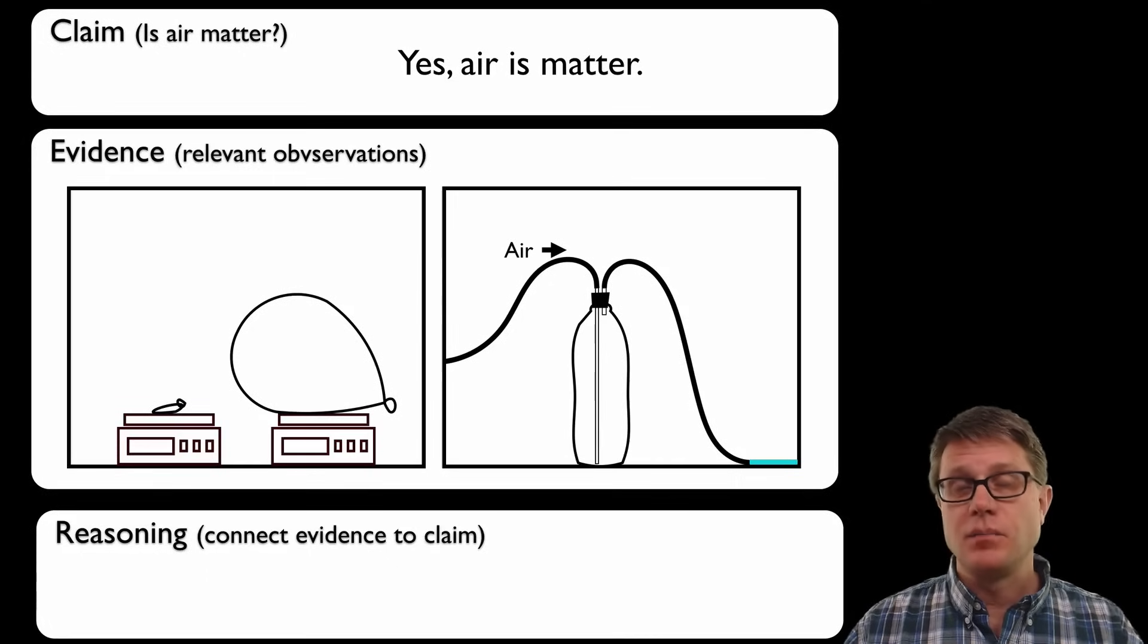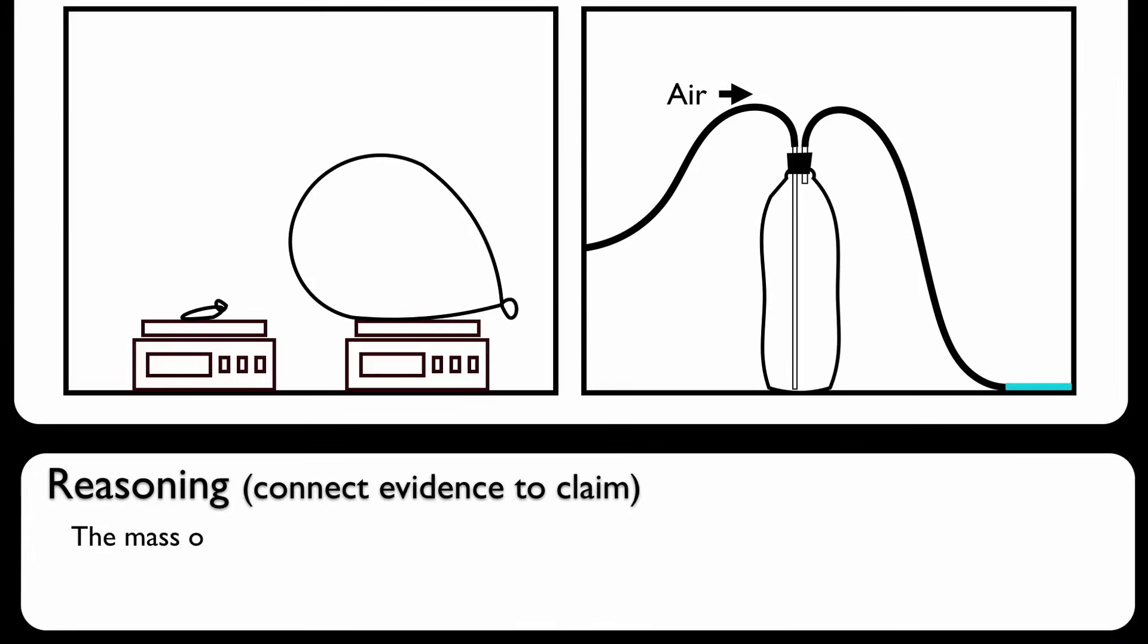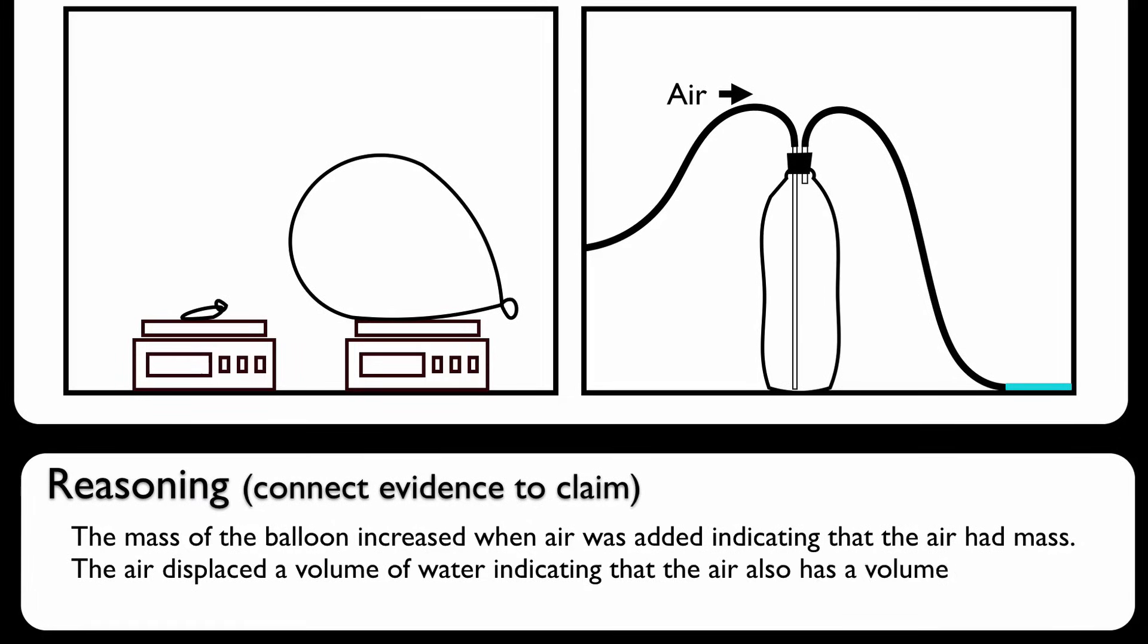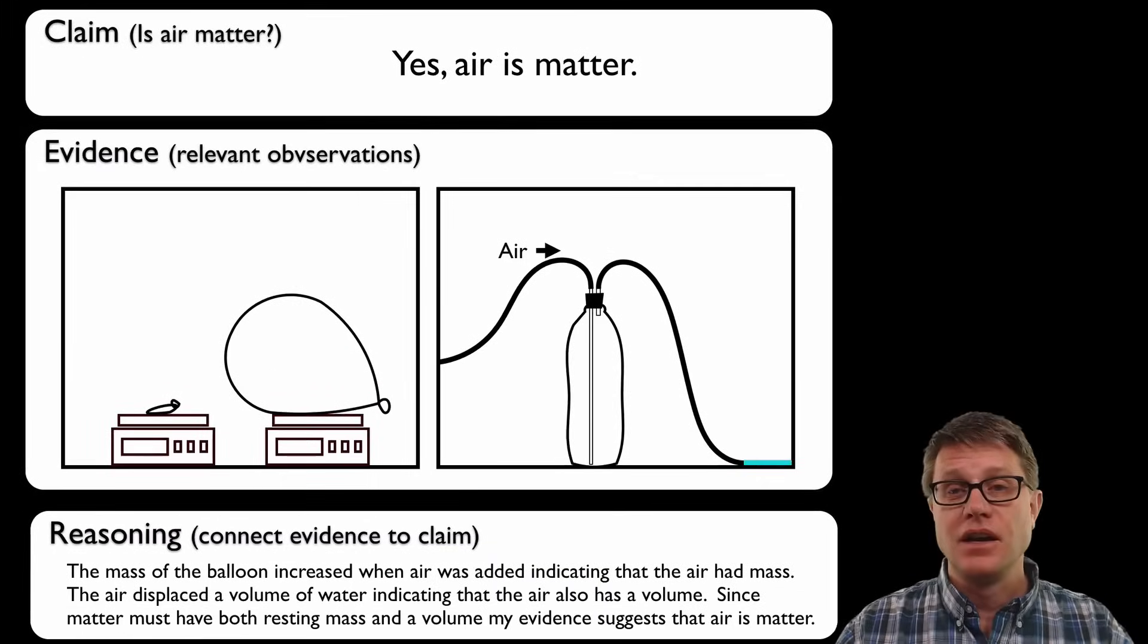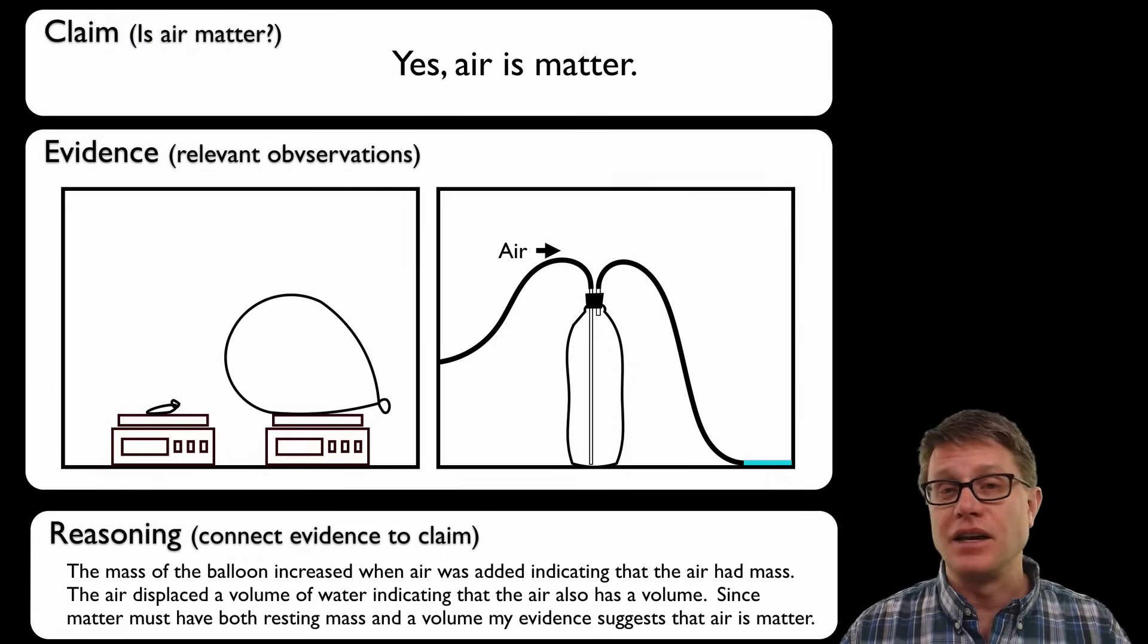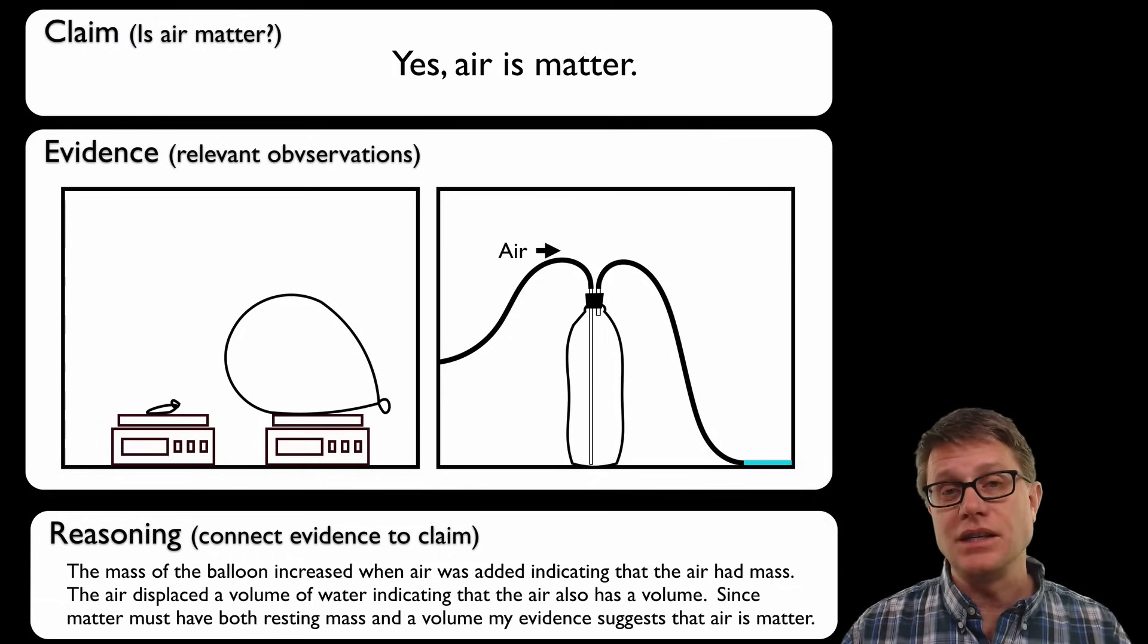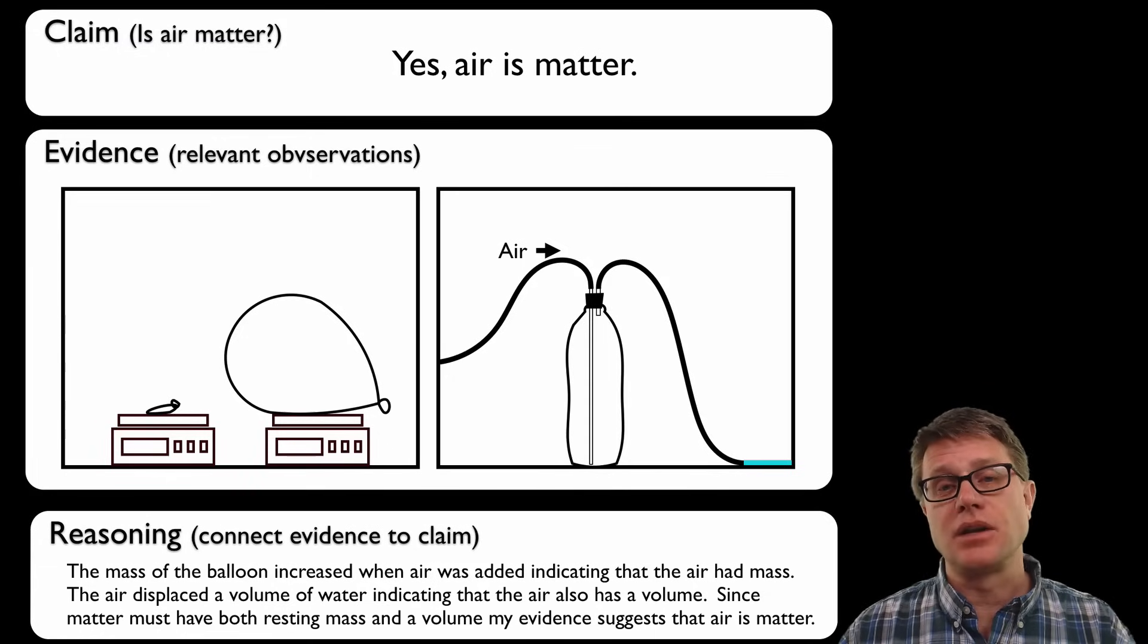I've gathered evidence, but now how do I do the reasoning? Well the reasoning is easier if it's tied to one of those scientific definitions that I had before. So let me read you my reasoning. The mass of the balloon increased when air was added, indicating that the air had mass. The air displaced a volume of water, indicating that the air also has a volume. Since matter must have both mass and volume, my evidence suggests that air is matter. That reasoning part is what we hope our students will start to write, and they never do. Generally when they're doing a lab write-up they simply tell us the evidence they gathered over and over and over in more detail. But what we really want is a connection between the evidence that you gathered and the explanation that you're trying to make.